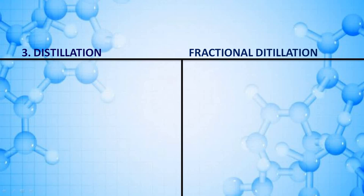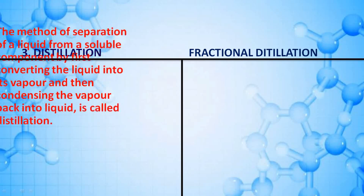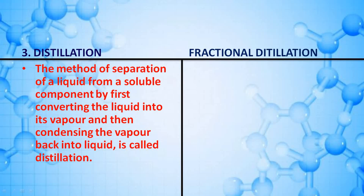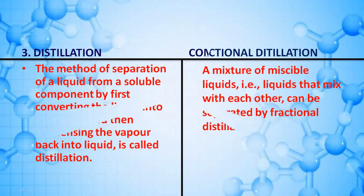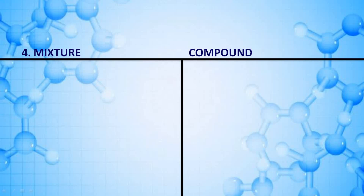Distinguish between distillation and fractional distillation. Distillation is the method of separating a liquid from a soluble component by first converting the liquid into vapor and then condensing the vapor back into liquid. Fractional distillation is used to separate a mixture of miscible liquids — liquids that mix with each other.